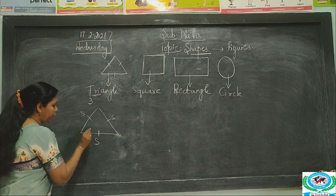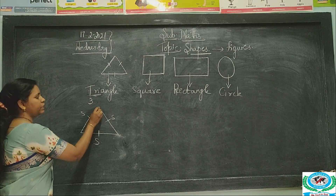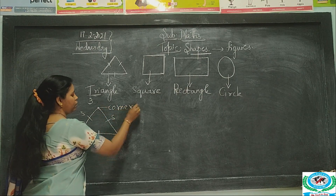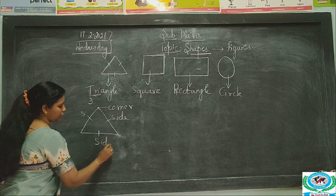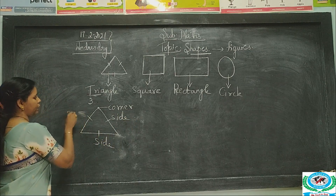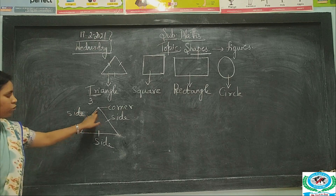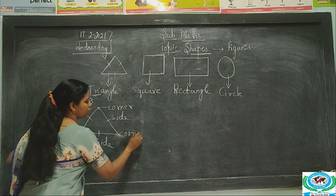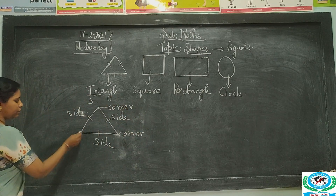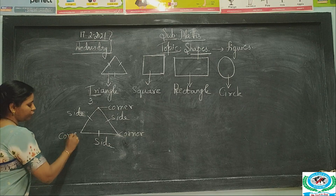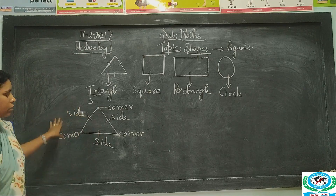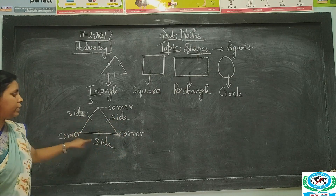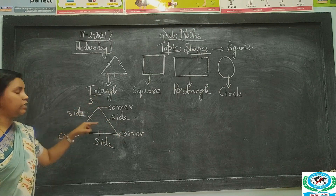The pointed ends where two sides meet are called corners. So this is a side, this is a side, and this is a corner. Likewise, this is a corner, this is a corner, and this one also is a corner. So a triangle is made up of three sides and three corners.